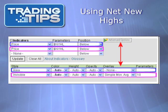You can use net new highs at StockCharts.com, but the process is somewhat complicated. First, enter the ticker for the index in the symbol box in the upper left. Then go to the indicators section and choose price. Then enter the symbol for net new highs in the parameters box — these symbols are provided on the following slide. Next, select where you want to position the indicator plot: above, below, or behind. In our examples, we've done below. Finally, select area for the style and click Update to see the results.